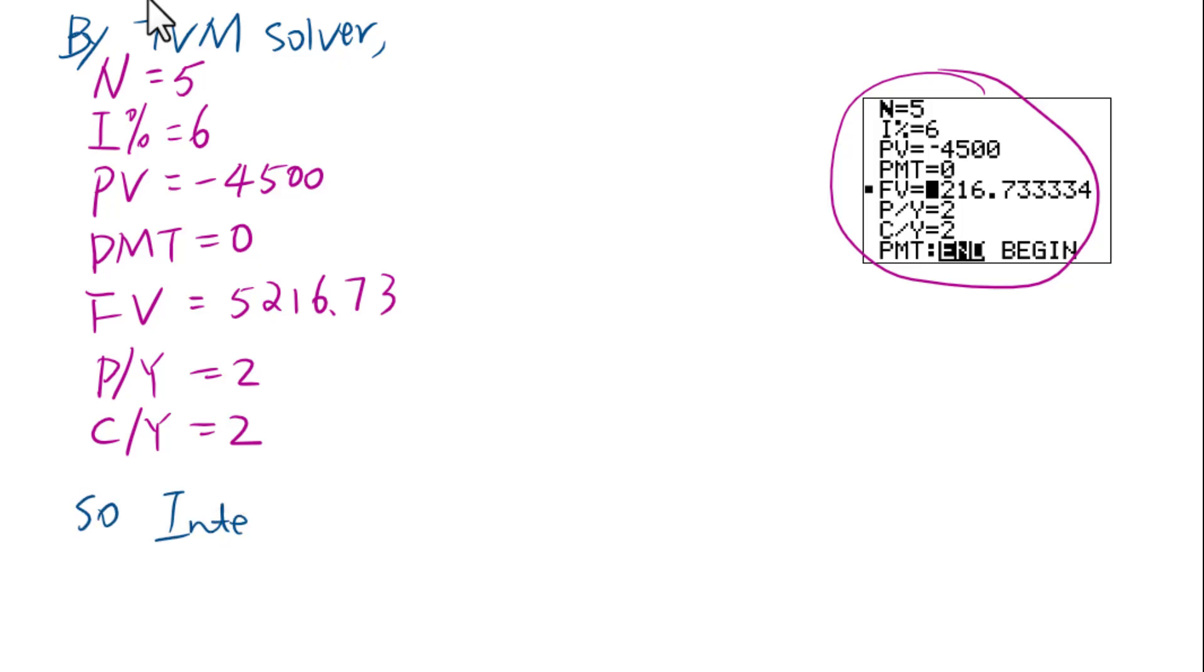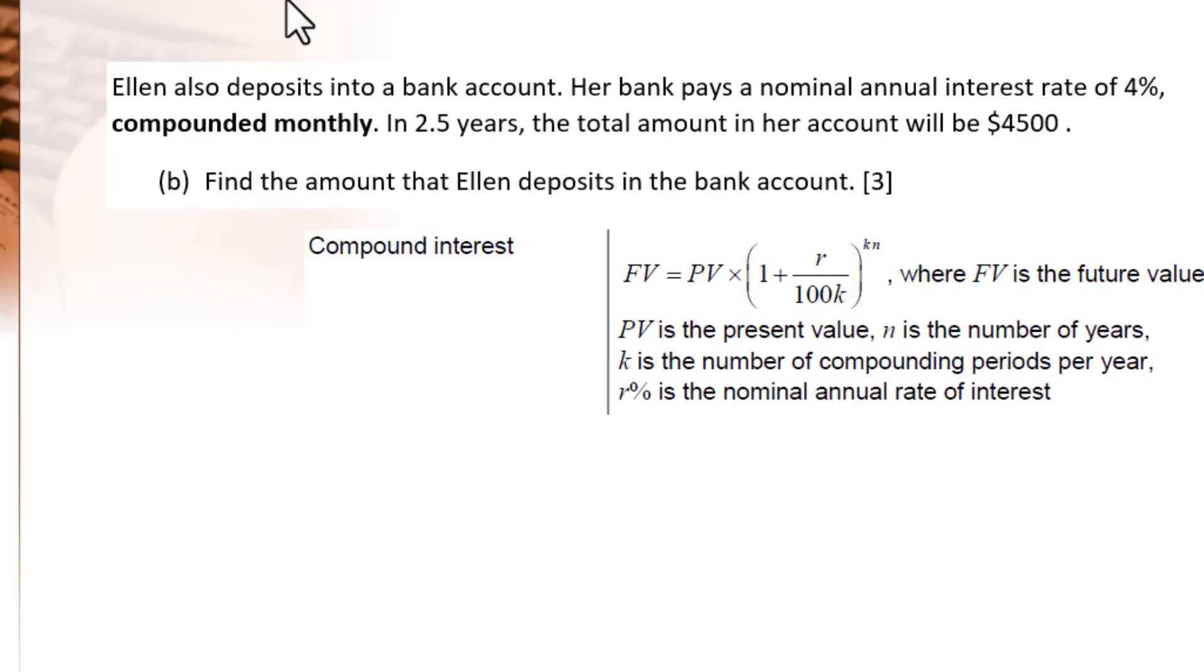Ellen also deposits into a bank account. Her bank pays a nominal annual interest rate of 4%, compounded monthly. In 2.5 years, the total amount in her account will be $4500. Find the amount that Ellen deposits in the bank account. We will use compound interest formula first.